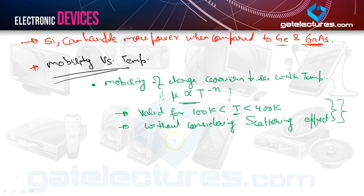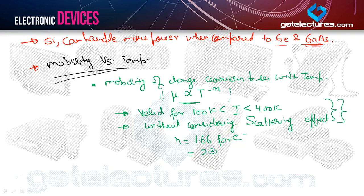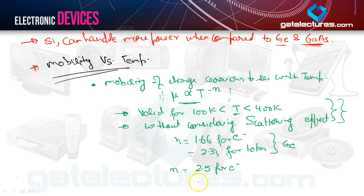Let's note down the values of n. n is a constant: n equals 1.66 for electrons and 2.33 for holes in germanium; and n equals 2.5 for electrons and 2.7 for holes in silicon. These are experimental values — it's not important to remember them.